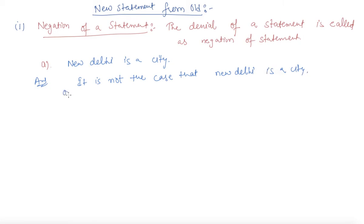Or this can also be written as: it is false that New Delhi is a city. This is how we can write a negation of any statement.